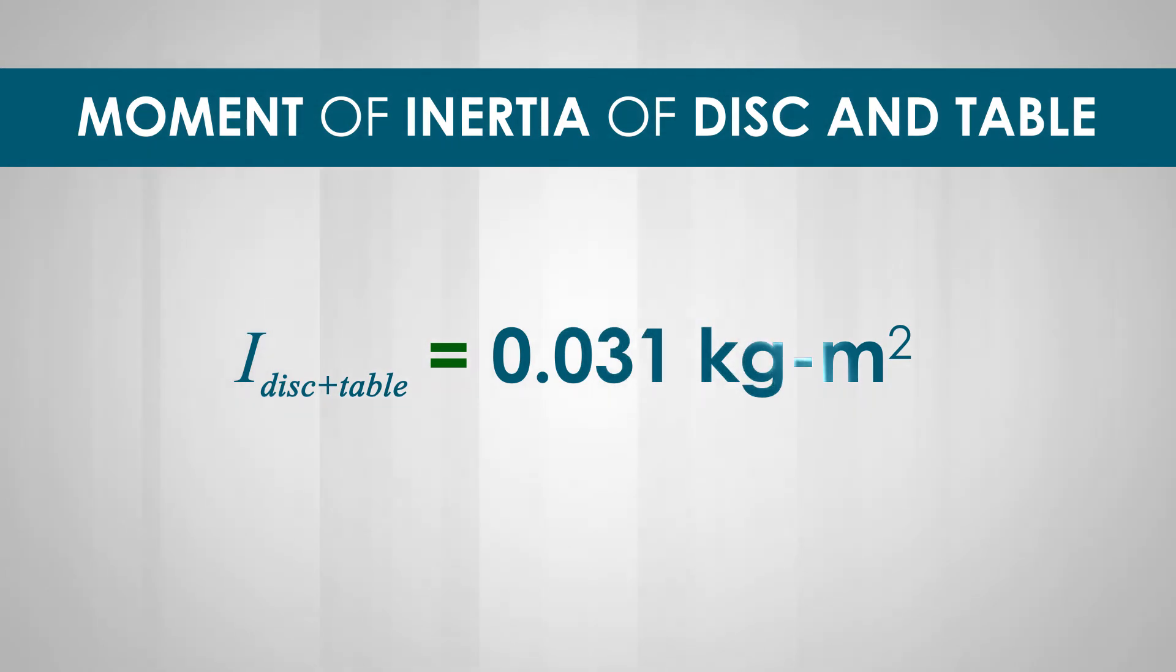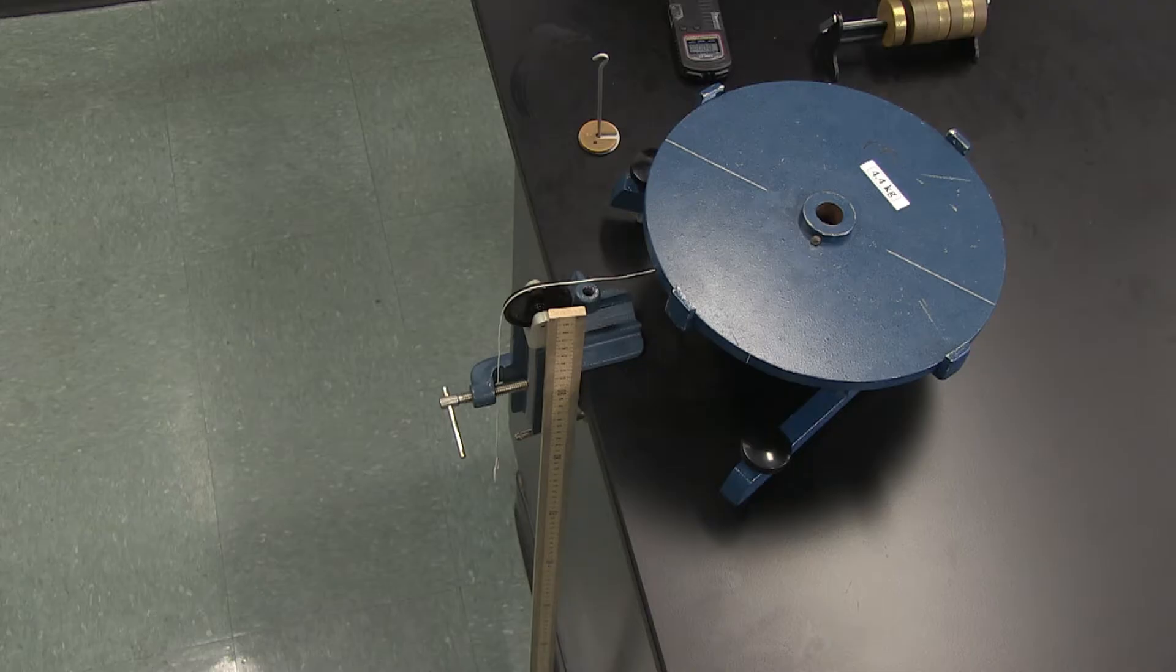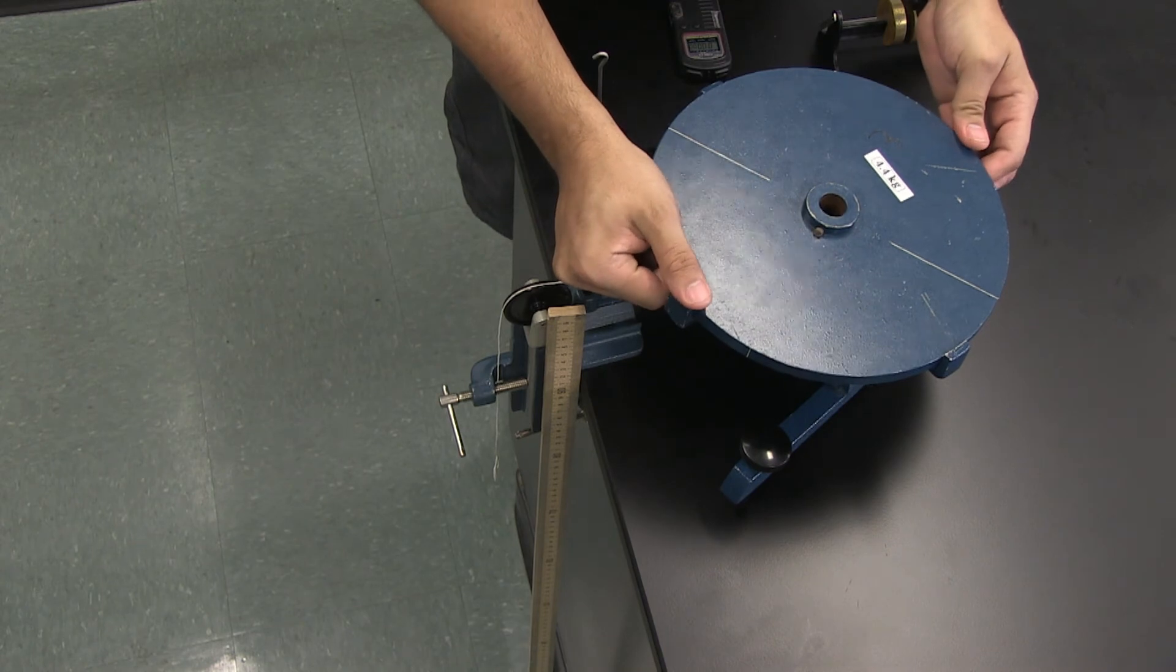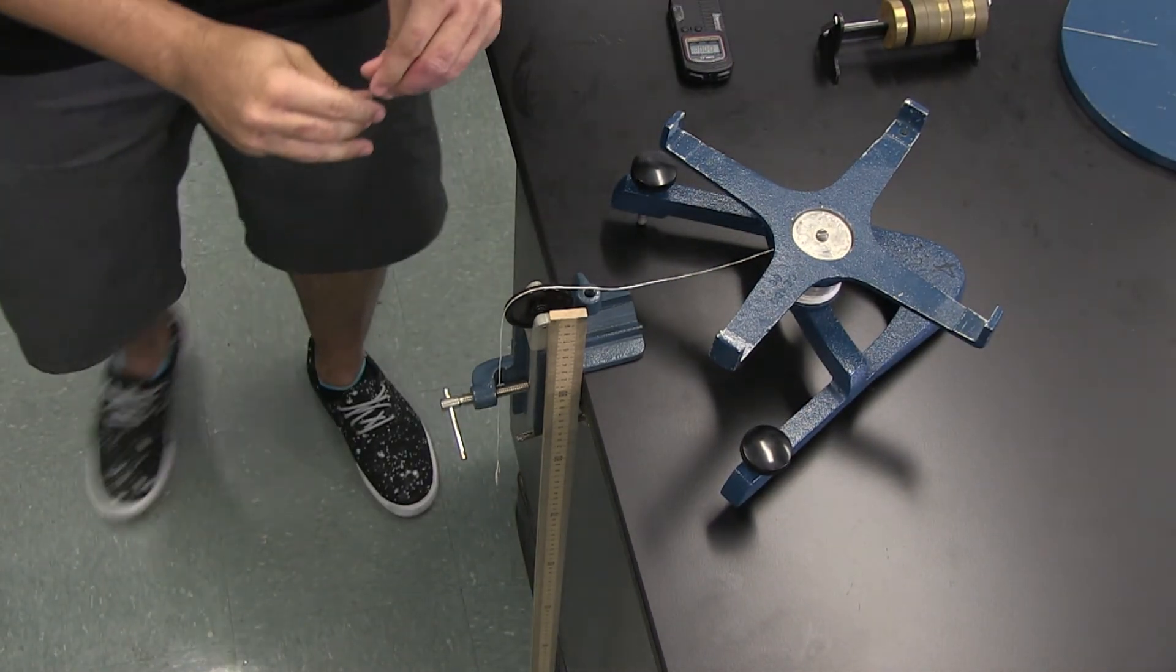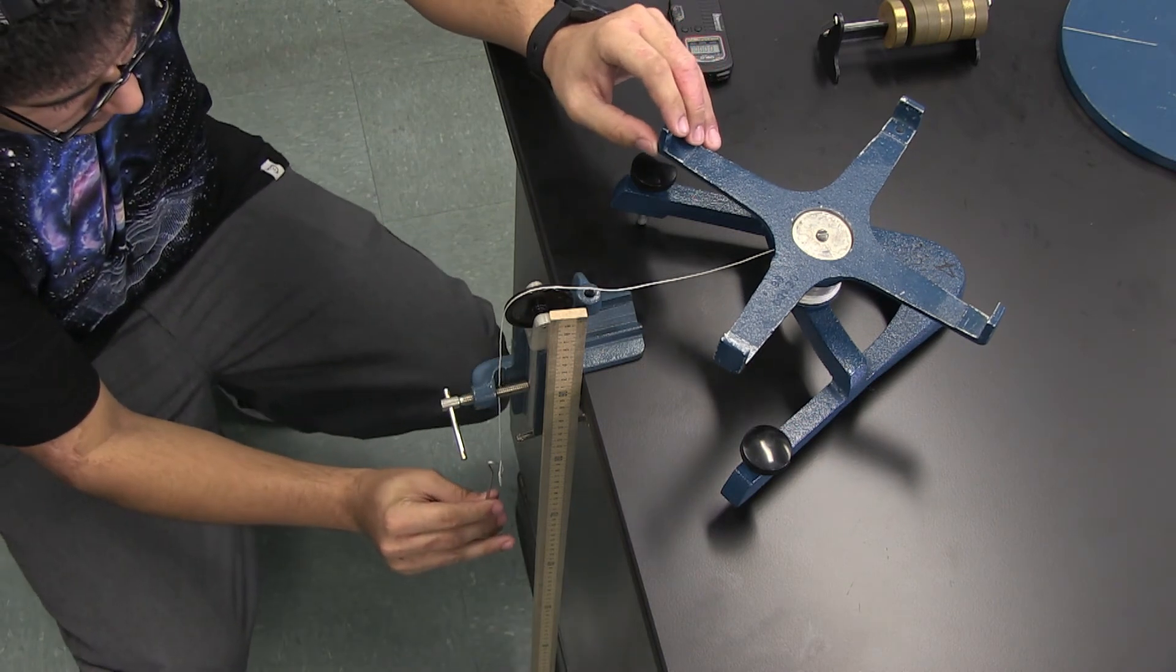So, how do you get the moment of inertia of the disk alone? We just have to repeat the experiment with an empty rotary table without the disk on top. That way, we will find the moment of inertia of the table alone.